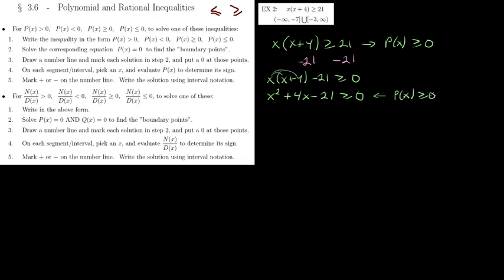This looks exactly like the form p(x) ≥ 0, where p(x) is a polynomial — that completes step one. Now step two is to solve the corresponding equation p(x) = 0, so we take x² + 4x − 21 and set it equal to 0.